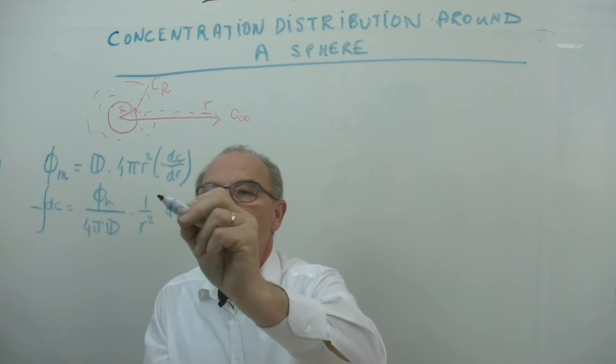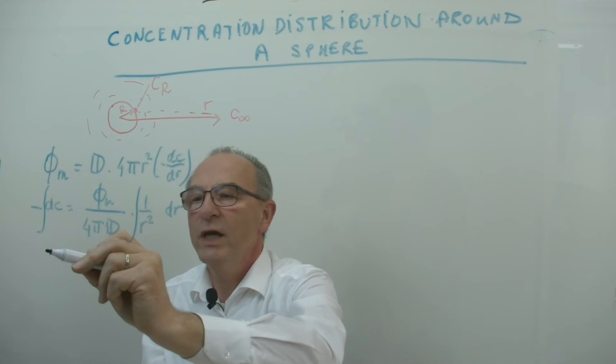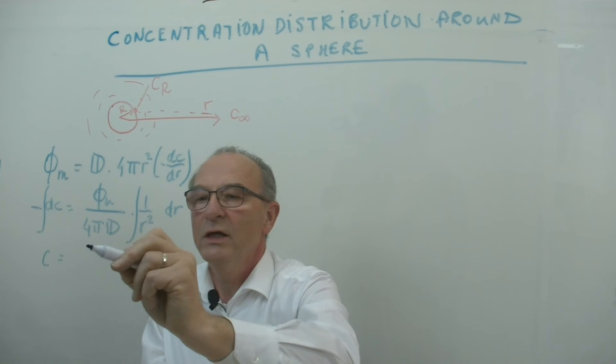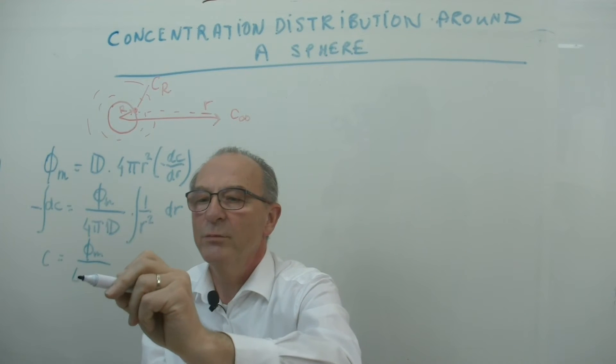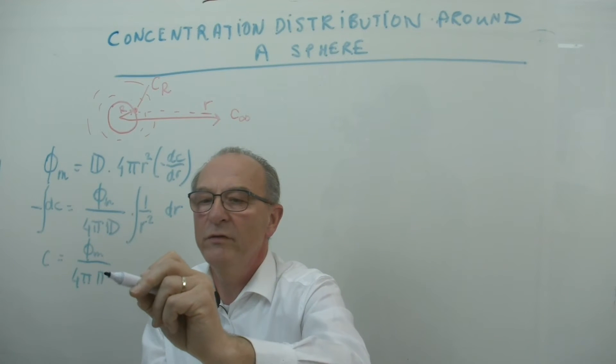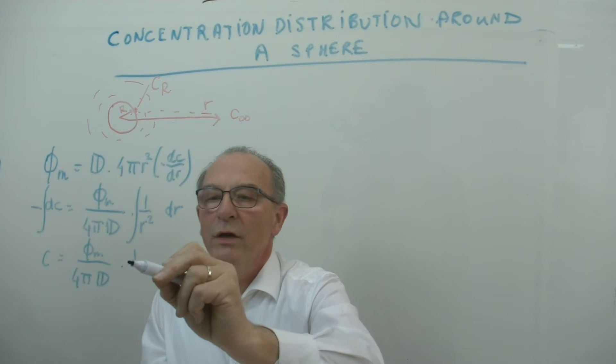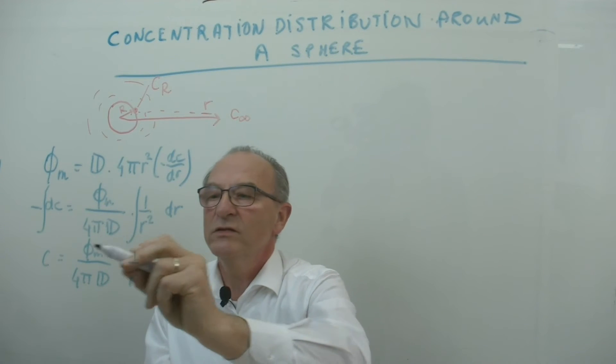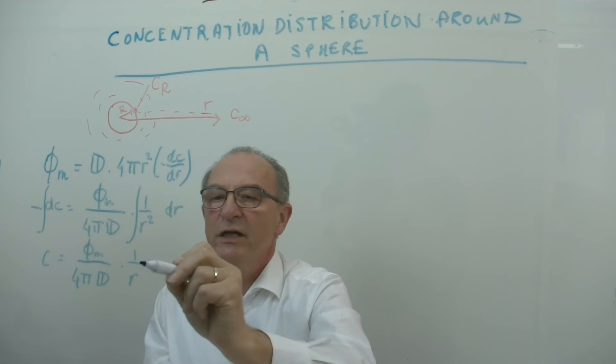Now we integrate at both sides and we obtain c is phi m divided by 4 pi multiplied by d, 1 over R. The minus, I had a minus here and a minus on the right side,